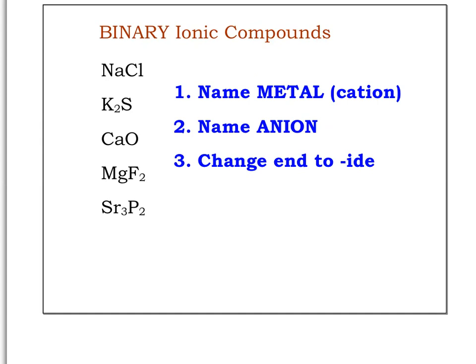The first type of ionic compound we're going to talk about is called binary ionic. A binary ionic compound basically contains two ions — a metal and a non-metal. They come together, and that's why we call it binary: because there are two things coming together.